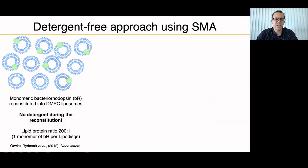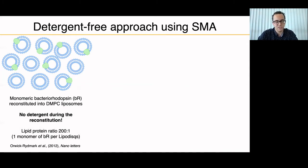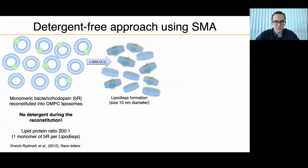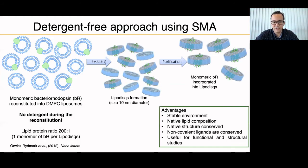We used a detergent-free approach using SMA. We wanted to use the monomeric, smallest form of the protein — not the trimer — to see if we could detect protein-lipid interactions with only the monomer. To do so, we mixed the purple membrane with DMPC, since there are not that many lipids available to form a lipodisc on its own. We used a lipid-to-protein ratio of 200:1 in order to have one monomer of bacteriorhodopsin per lipodisc. We used no detergent, mixed SMA 3:1, formed the lipodisc, and purified by removing excess SMA.